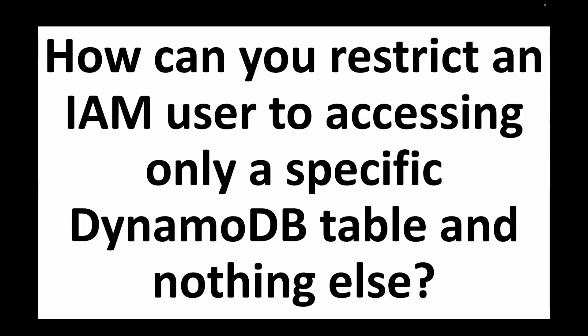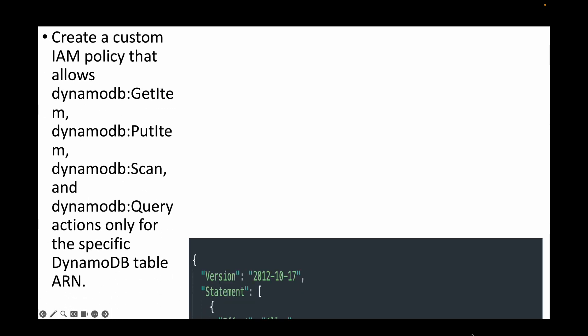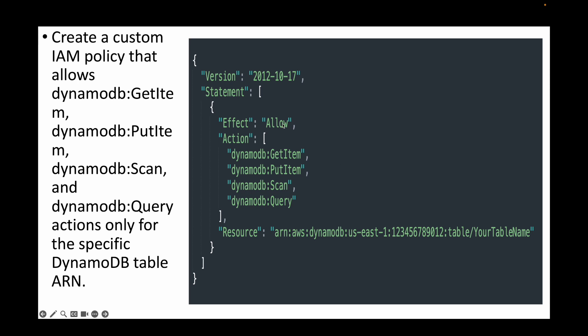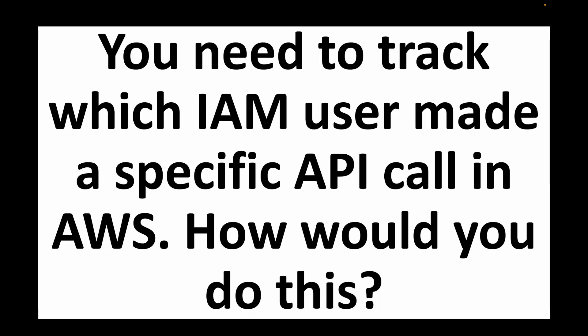The next question is: how can you restrict an IAM user to accessing only a specific DynamoDB table and nothing else? For this, we create an IAM policy. We allow actions — GetItem, PutItem, Scan, and Query — on DynamoDB, but in the resource we specify the ARN of that particular table. This restricts the user to only that specific DynamoDB table. For example, if your table name is 'example', all those actions are allowed only on that table.